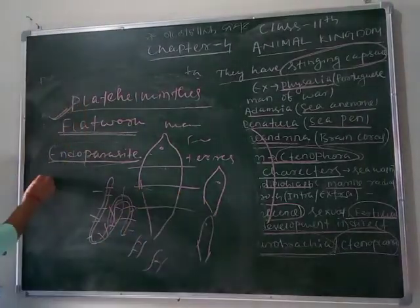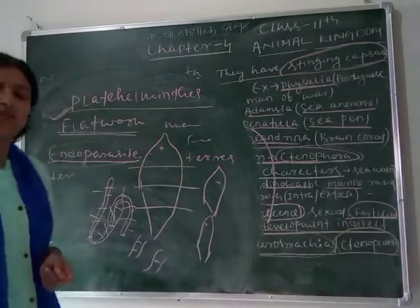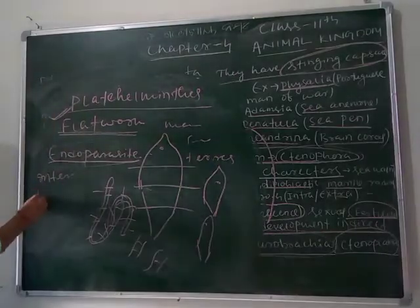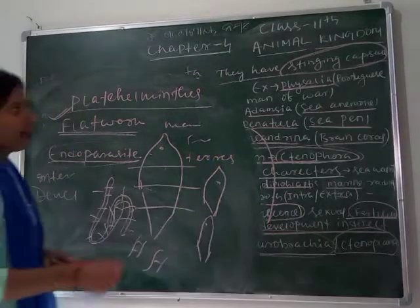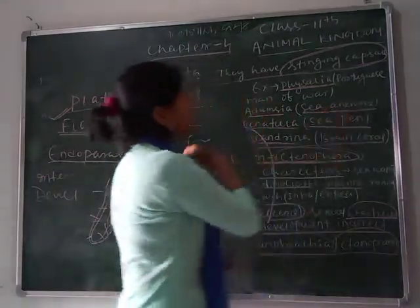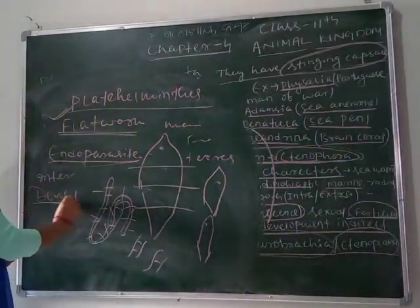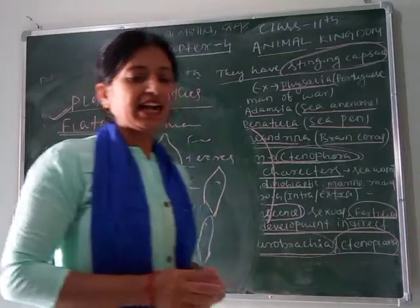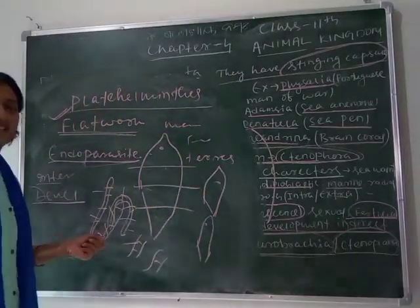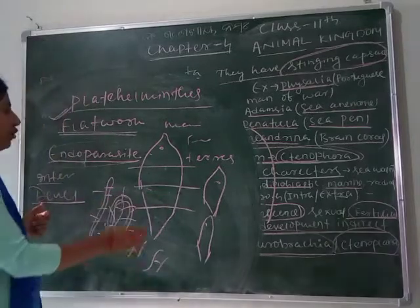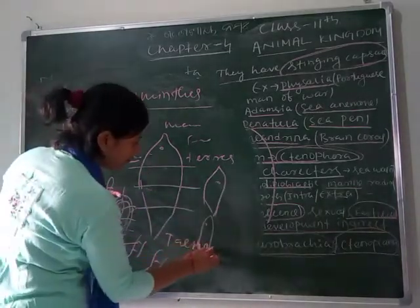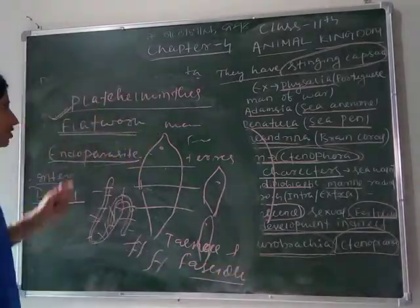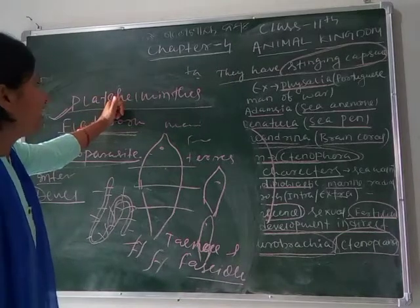Fertilization is internal — meaning fertilization takes place inside the body of the organism. Development is indirect, as we also saw in Ctenophora. Examples of Platyhelminthes are Taenia (tapeworm) and Fasciola (liver fluke).